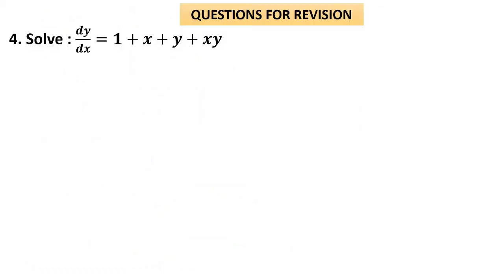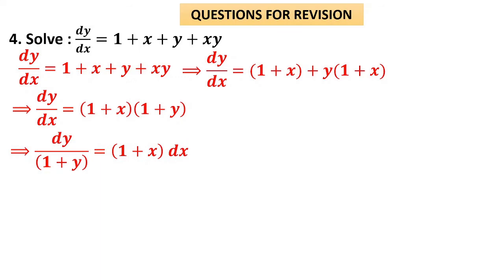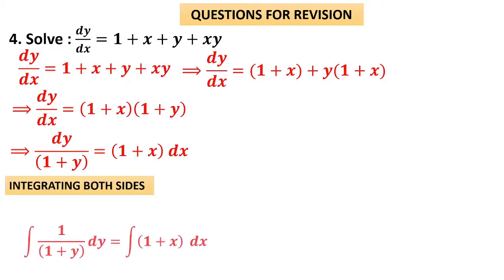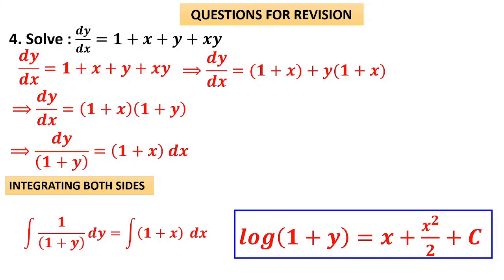Question number 4: Solve dy/dx = 1 + x + y + xy. It may seem this cannot be split by variable separable, but on the right-hand side take (1+x) as one term and factor y from the remaining terms: y(1+x). So the right-hand side becomes (1+x)(1+y). Therefore dy/(1+y) = (1+x)dx. Integrating both sides: log(1+y) = x + x²/2 + c.